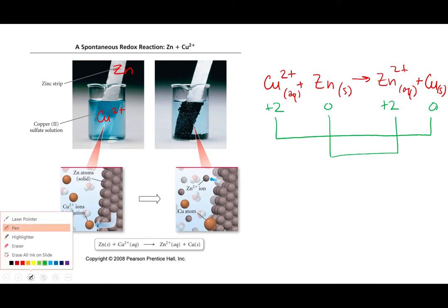So the two half reactions would be, my oxidation is the zinc solid goes to zinc plus two. How many electrons is zinc losing? Two.